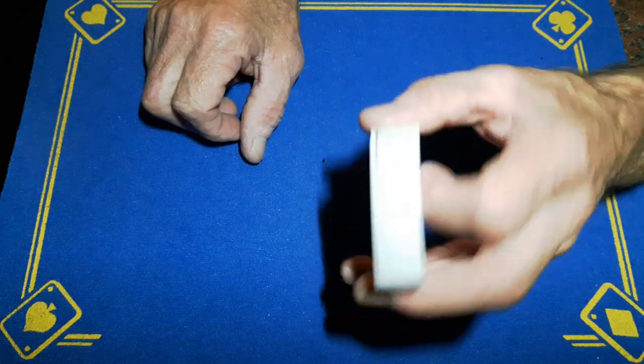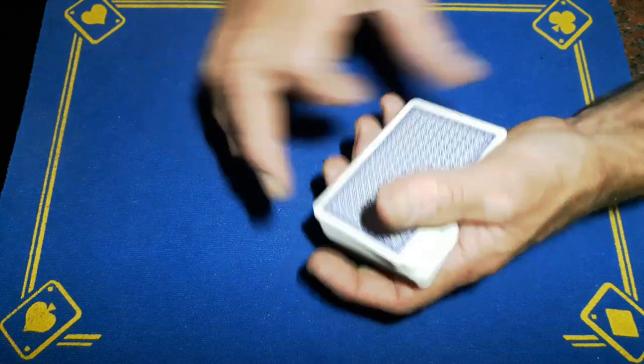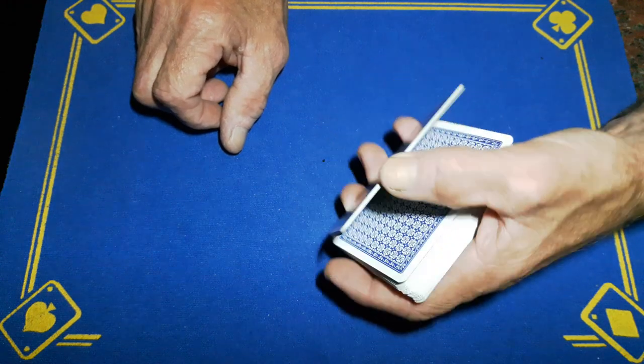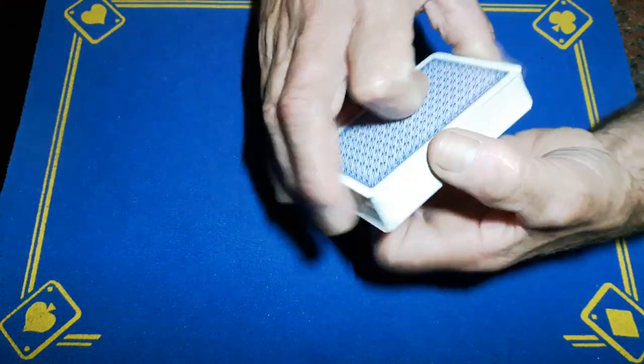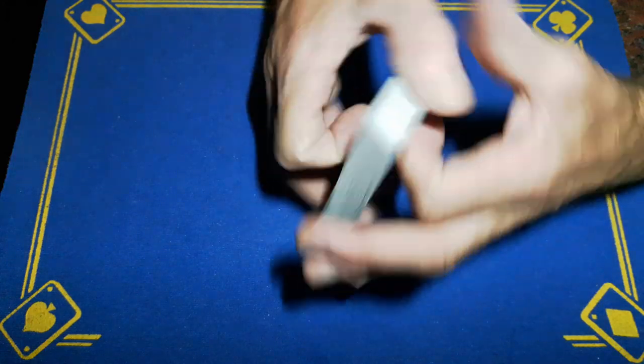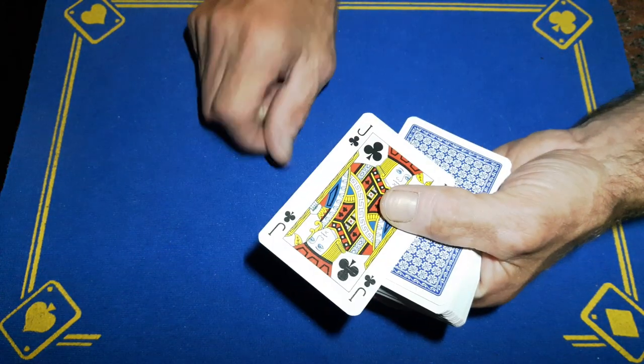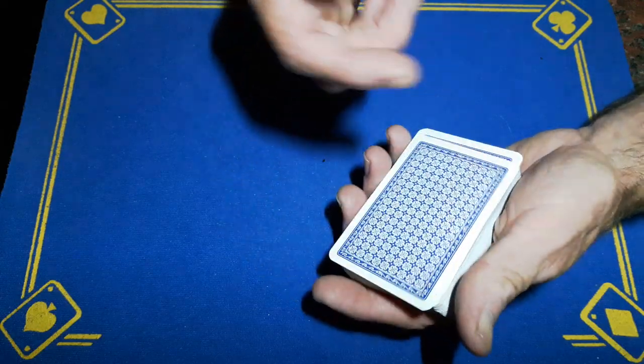So you can just casually cut the cards to the bottom like that, knowing that their card is now sat on top. You could reveal their card any way you like.